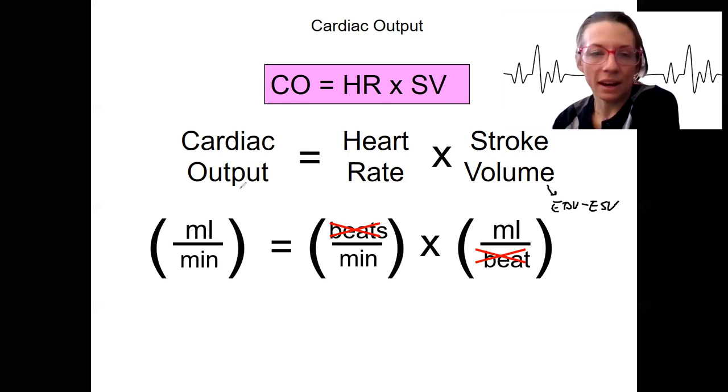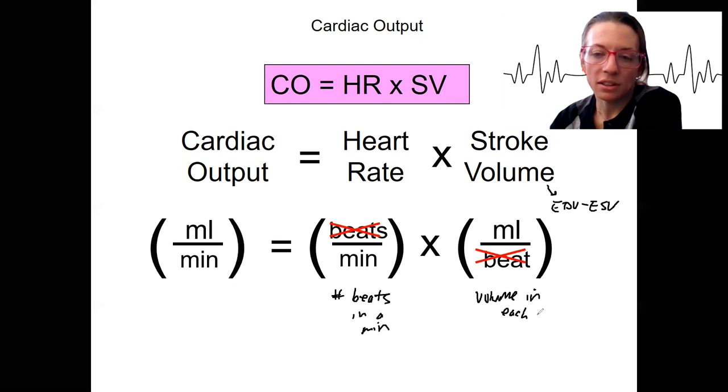So cardiac output gives us the number of beats in a minute and the volume in each beat, which gives us the volume in milliliters per minute.